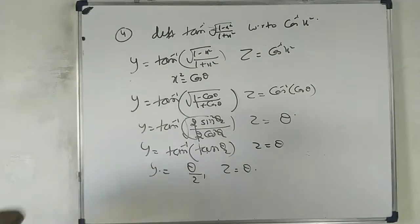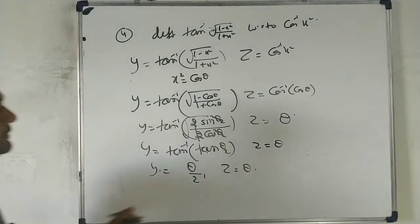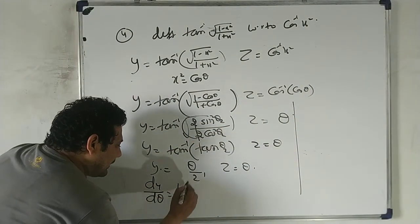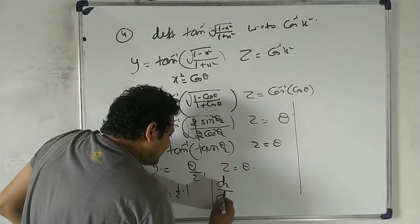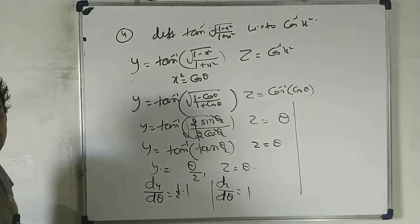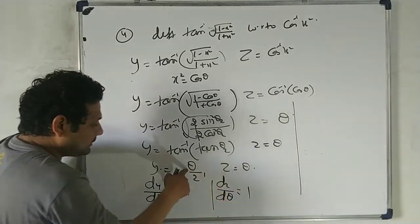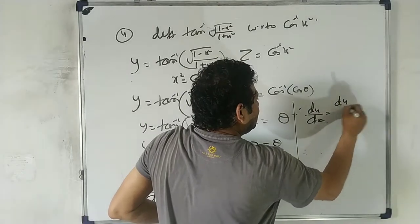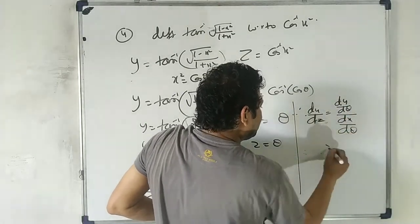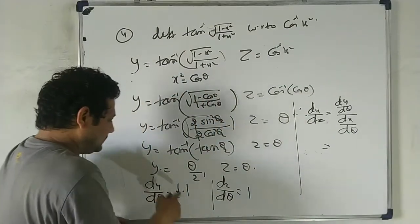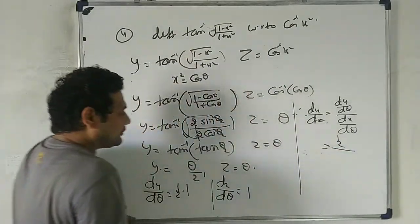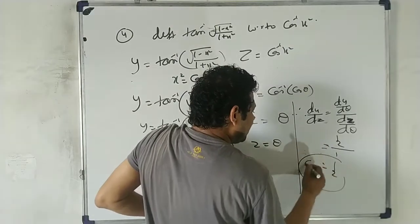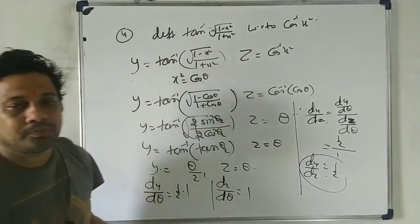So y = θ/2 and z = θ. Now dy/dθ = 1/2 and dz/dθ = 1. Therefore dy/dz = (dy/dθ)/(dz/dθ) = (1/2)/1 = 1/2. This is the answer. It's a very important question — make sure to note it down.